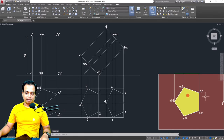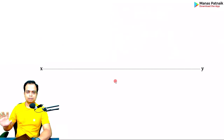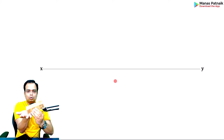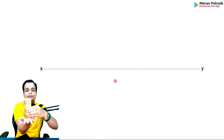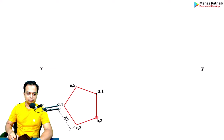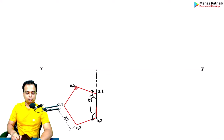Now let us go ahead and create the projections. Draw the XY line. In step one we begin with the top view because the true shape of the base can only be seen from the top. Make a pentagon. First make a line, then at an angle of 108 degrees this way, and then at an angle of 108 degrees the other way. When you reach these two points, put an arc of radius 25.